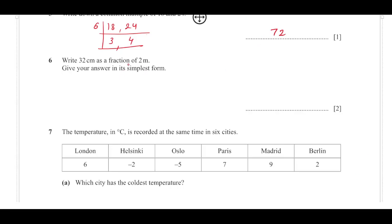Here I have to write 32 centimeters as a fraction of 2 meters and give the answer in the simplest form. So I have to write 32 centimeters as a fraction of 2 meters, so what we will do is divide.